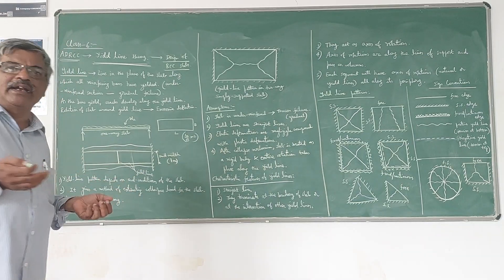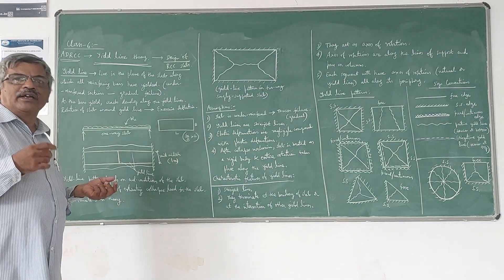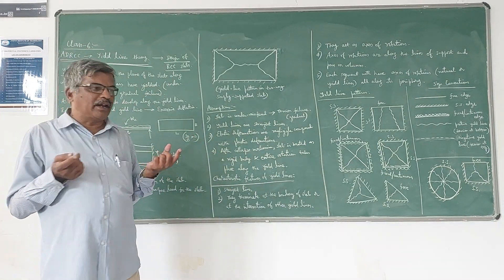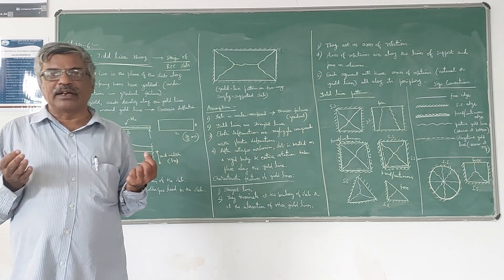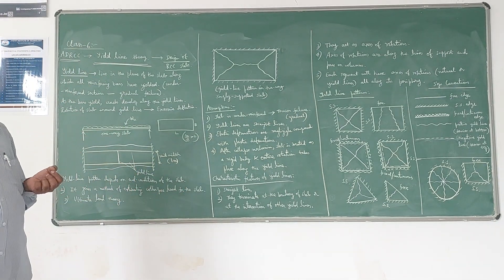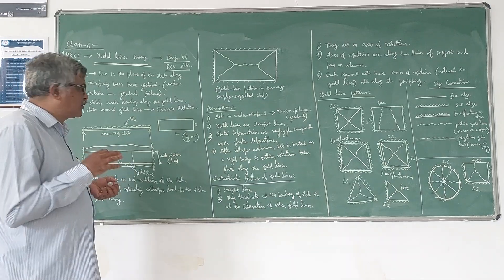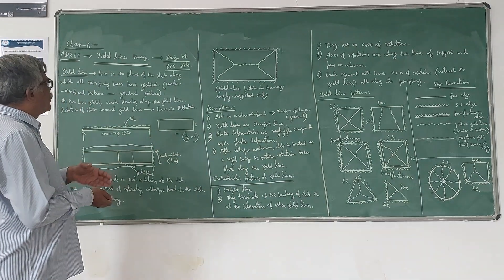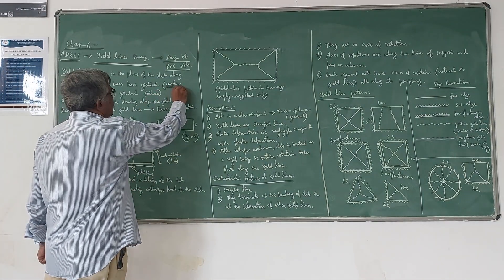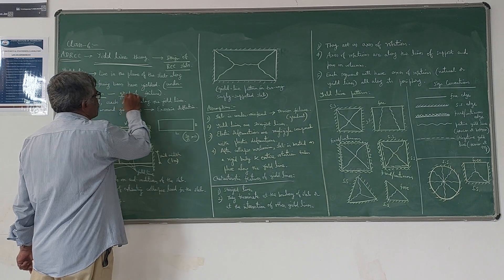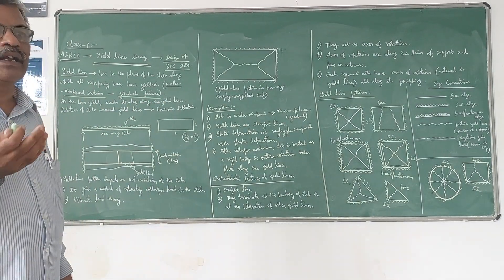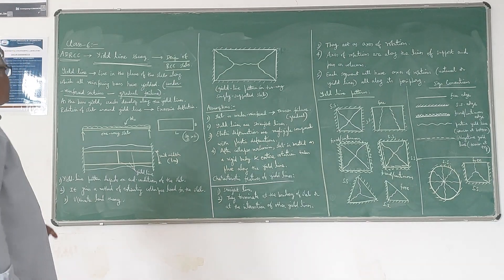The formation of a yield line is an indication of the failure of the slab. If you know how to plot the yield line pattern for a slab with given end conditions, you can compute the maximum load that slab can take. This is known as yield line analysis. Normally in the case of under-reinforced sections, gradual failure can be expected.